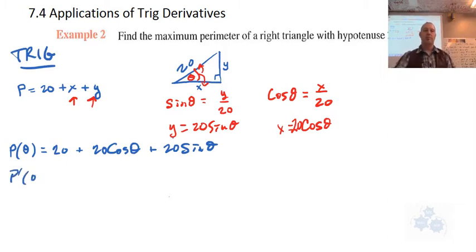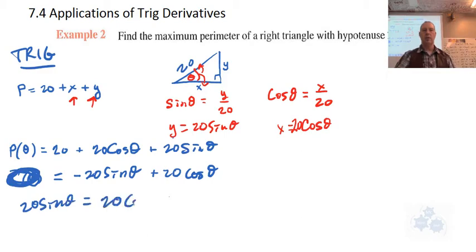We're going to take the derivative here. The derivative of 20 is 0. The derivative of 20 cos θ is -20 sin θ. Because we're taking the derivative with respect to θ, the chain rule doesn't really apply, we don't have to write θ', it's just times 1. Then plus 20 cos θ. Are you good with me so far?